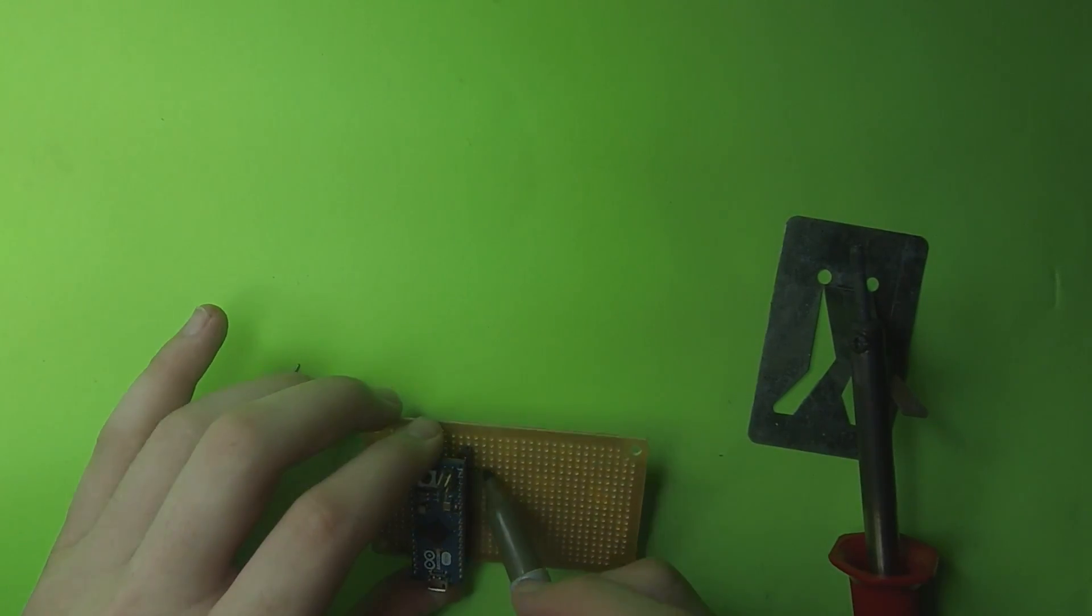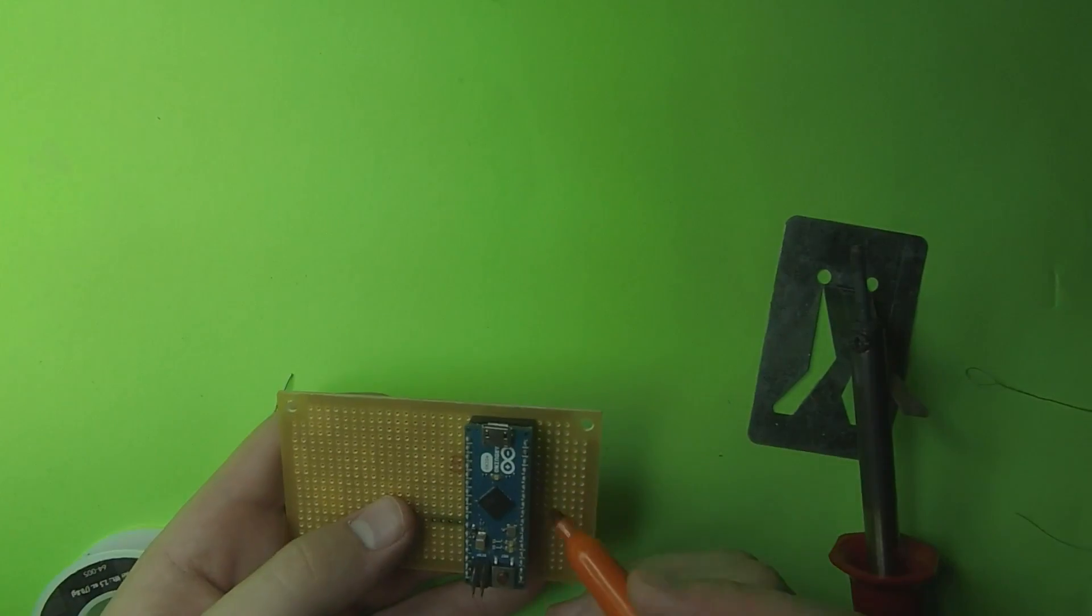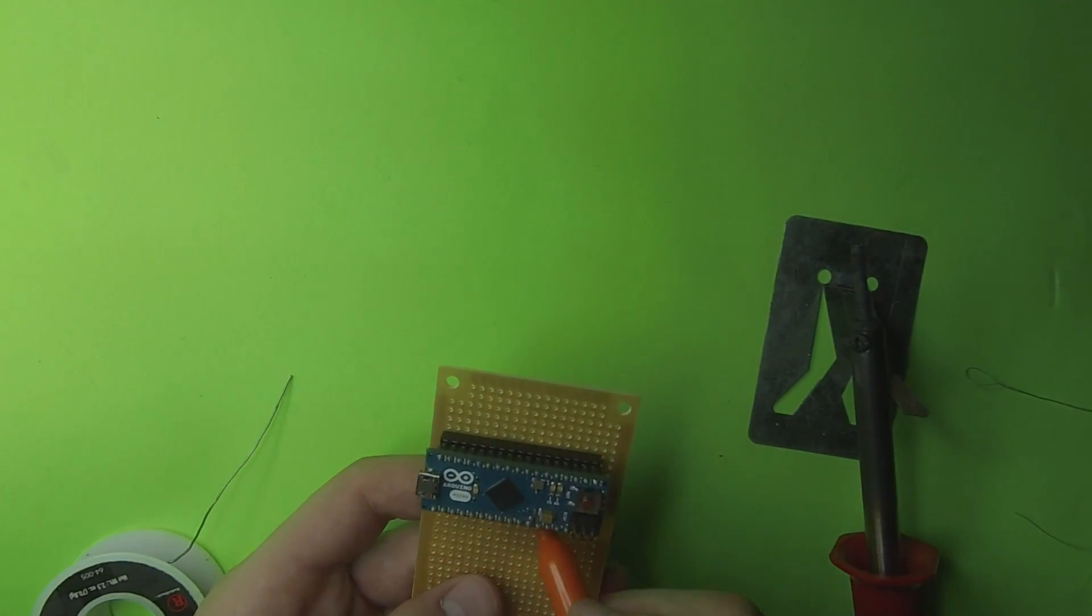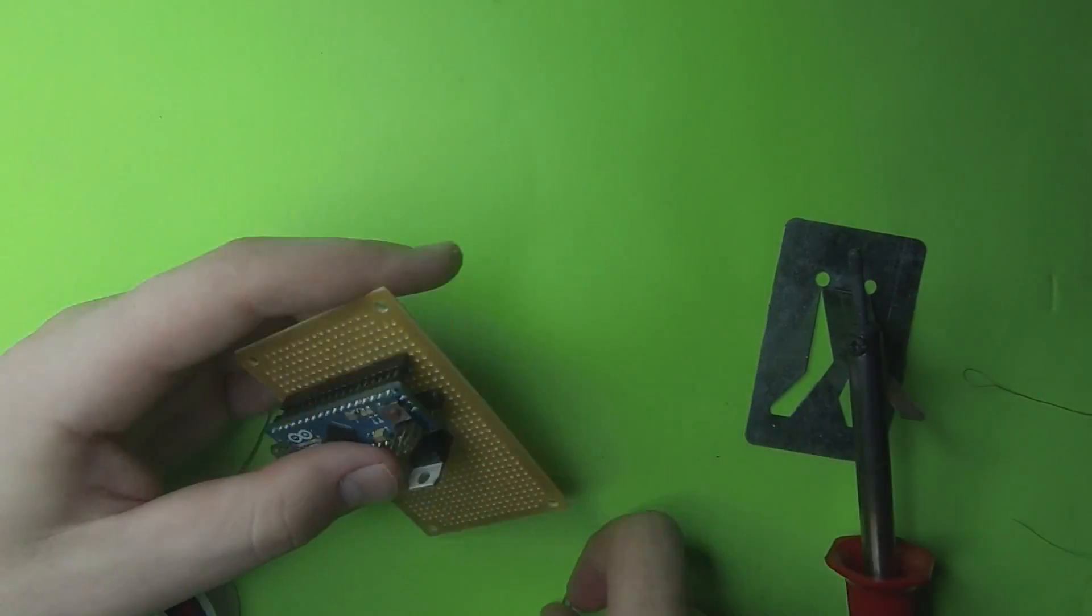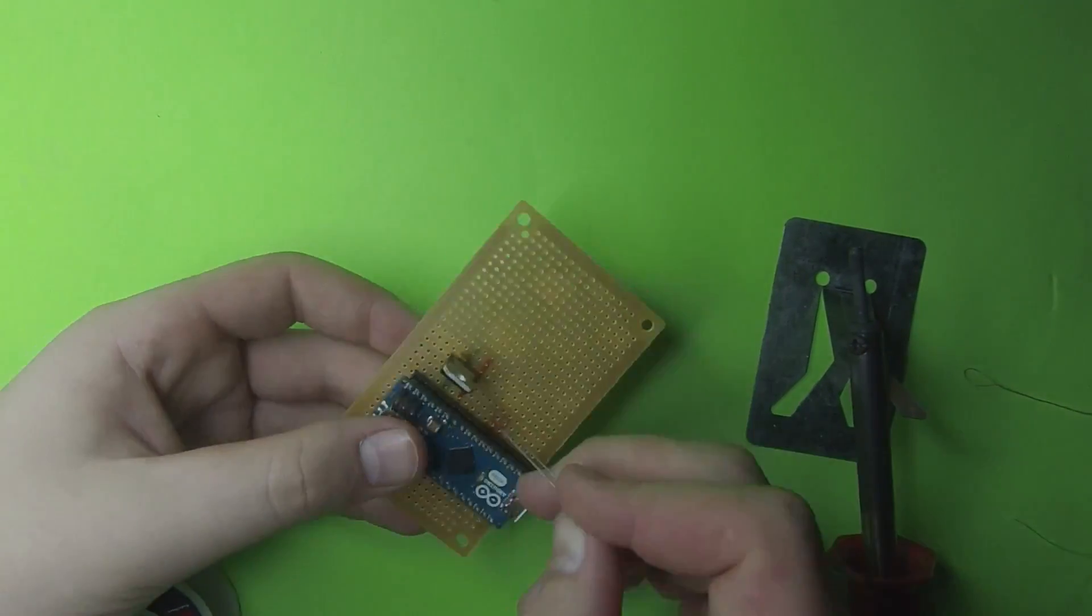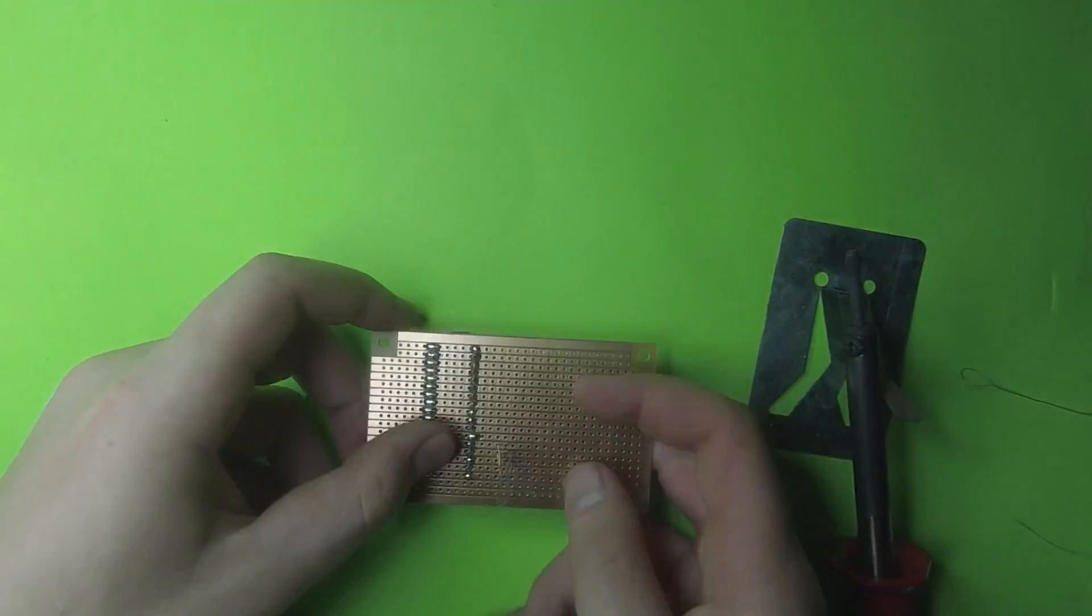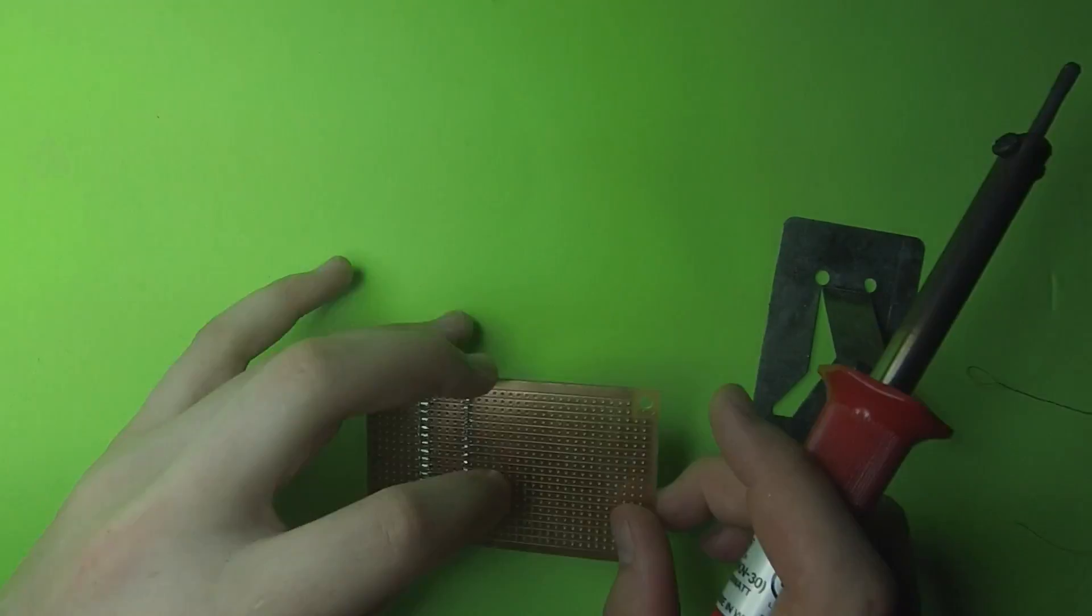Next, I marked where the positive and ground rails, or pins, whatever you prefer to call them. This is where the 5-volt regulator will go. Be sure to get all your pins correctly, and solder it down to the board.